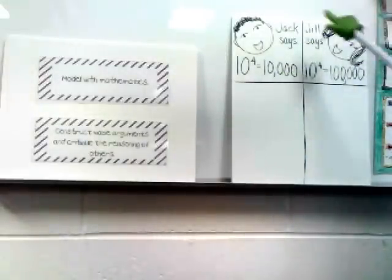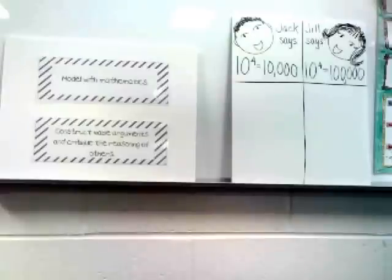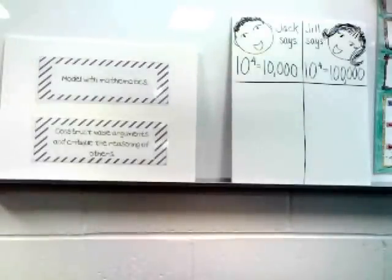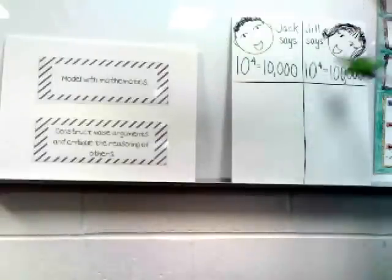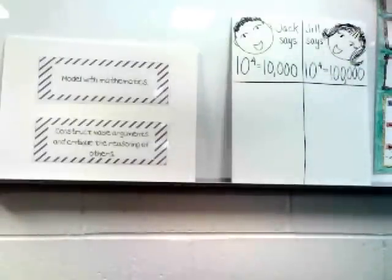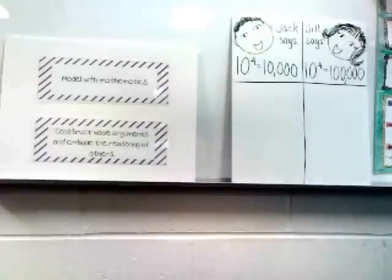Here we have an example that would be at a middle school level. Jack says 10 to the 4th power is 10,000. Jill says 10 to the 4th power is 100,000. With this activity, it's best to place it in your math unit just after you've introduced a skill, but before students have it really firm yet. Your goal with Jack and Jill Problems is to uncover those common misconceptions that students have. You want one answer that's correct, and the other answer should be something that students are likely to do incorrectly.